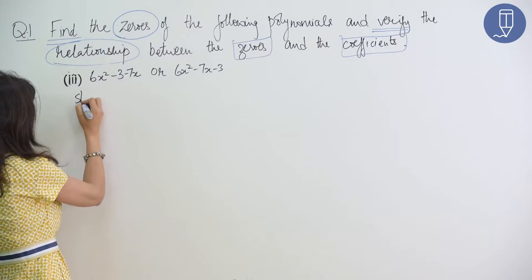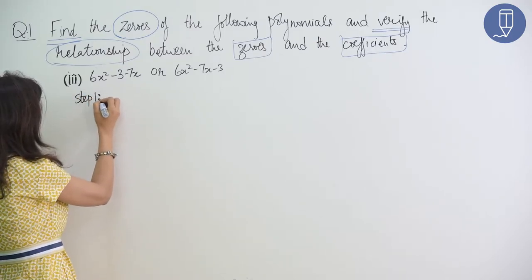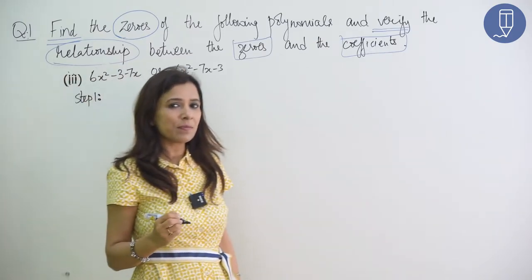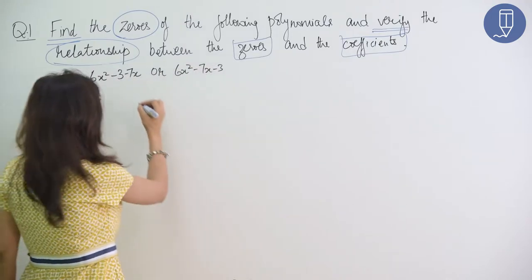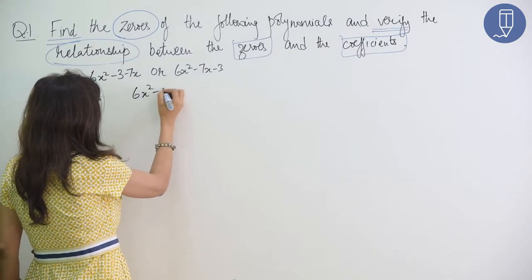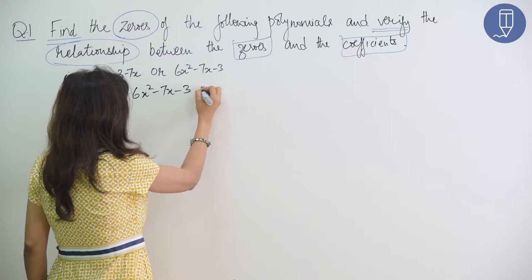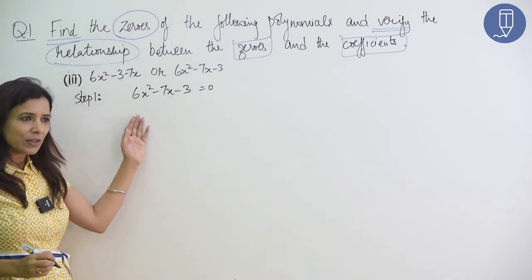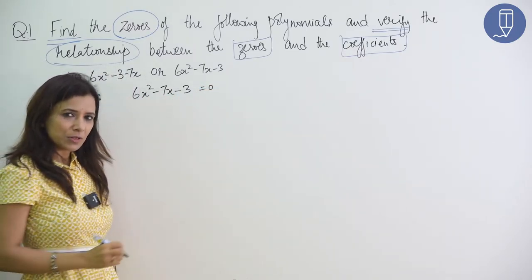Step 1. Do you remember what was step 1? Quickly, first of all, you need to find the zeros. So, 6x²-7x-3 is equal to 0. For zeros to find out, we put the polynomial equal to 0. So, we put it.